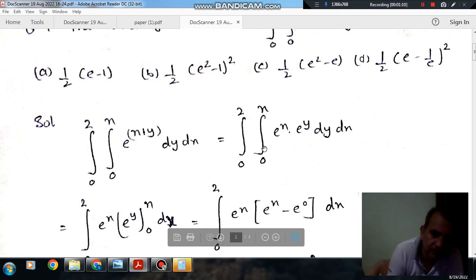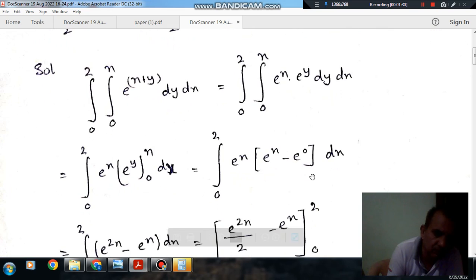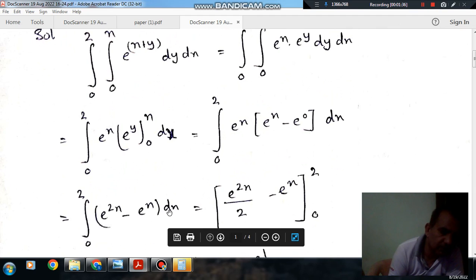So it will be ∫ e^x [e^y]ₓ⁰ dx. Integration is e^y and limits are x to 0. And as we have integrated it, so there will be no dy, there will be dx. Now putting the limit, so it will be ∫ e^x (e^x - e⁰) dx.